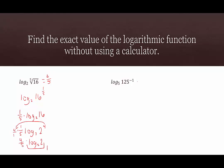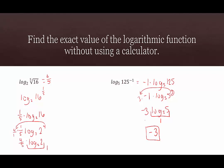We already have an exponent on the argument, so we pull that out in front: negative 1 times log base 5 of 125. And 125 is 5 cubed, so we get negative 1 times log base 5 of 5 cubed. Pull the 3 out and multiply: 3 times negative 1 is negative 3 times log base 5 of 5. Log base 5 of 5 is 1, and negative 3 times 1 is negative 3. So log base 5 of 125 to the negative first is negative 3.